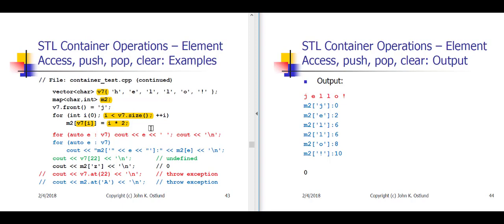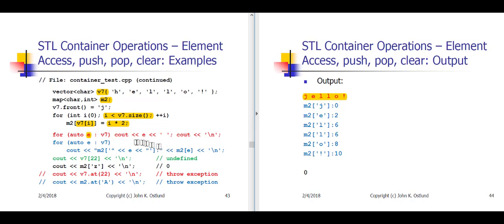Then we store 8 into m2['o'] and 10 into m2['!'] and we're done with that loop. In this range-for loop, I'm simply printing out the elements of v7, which are 'j', 'e', 'l', 'l', 'o', '!', and then using each element of v7 as an index or key into my map m2.